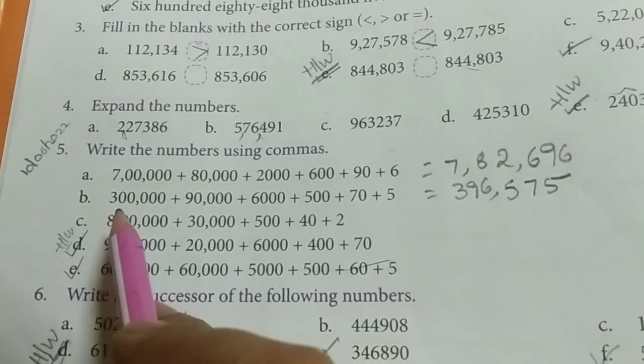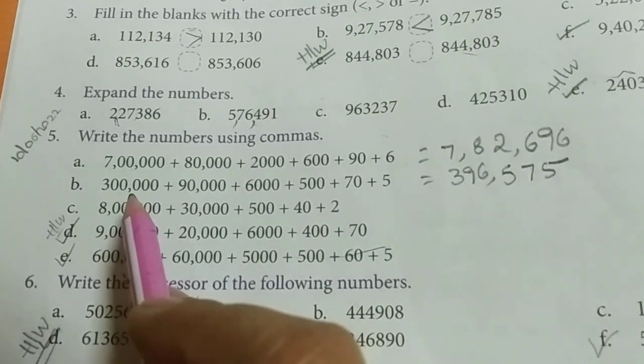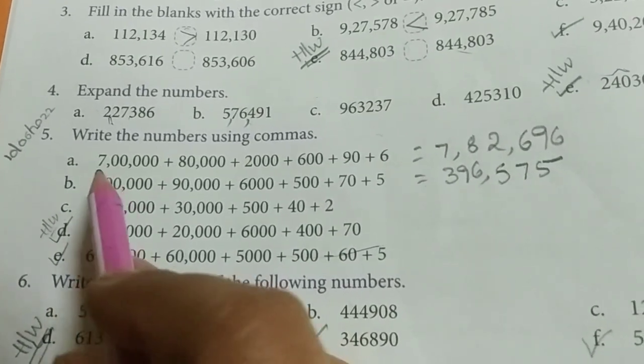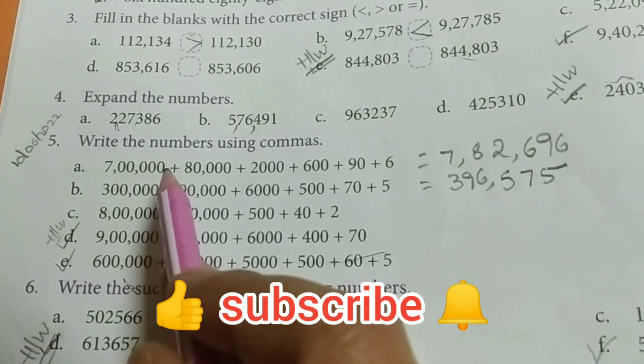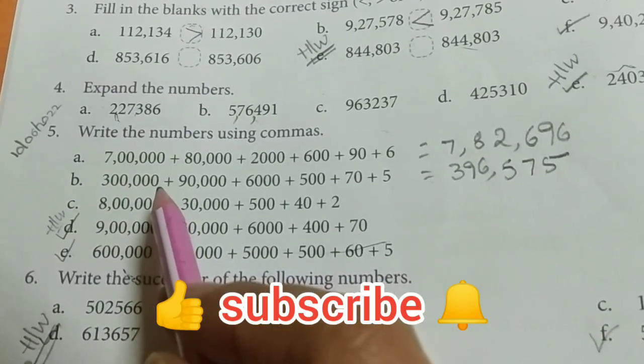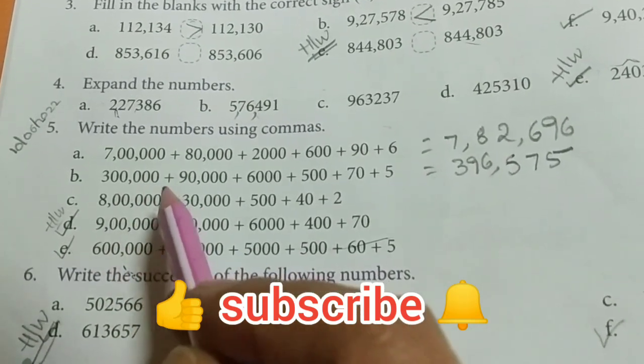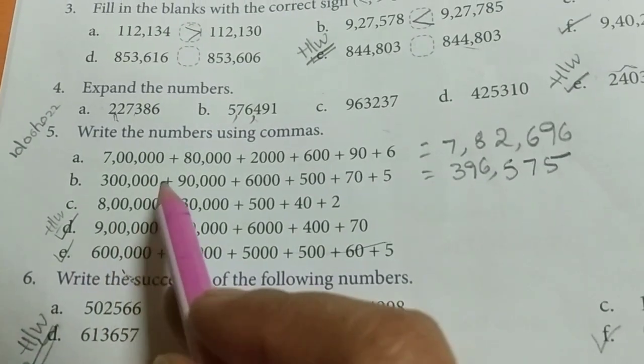how it came by seeing this 300,000 this is, here comma is given here not yet see above 7 lakhs and below that 300,000 you compare this one, by seeing this you should understand this is in international system, next like this,